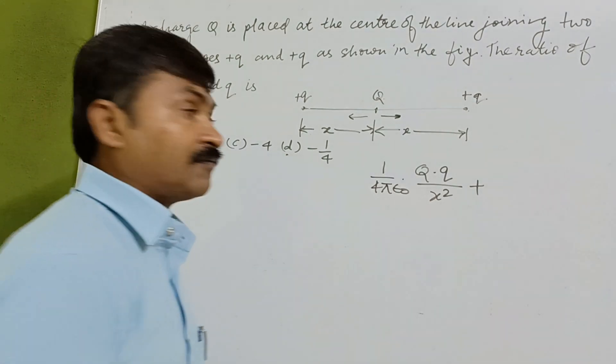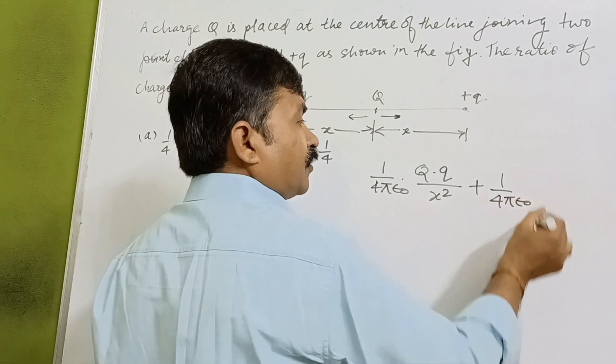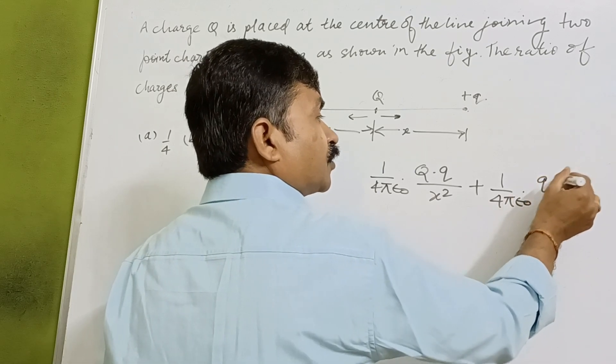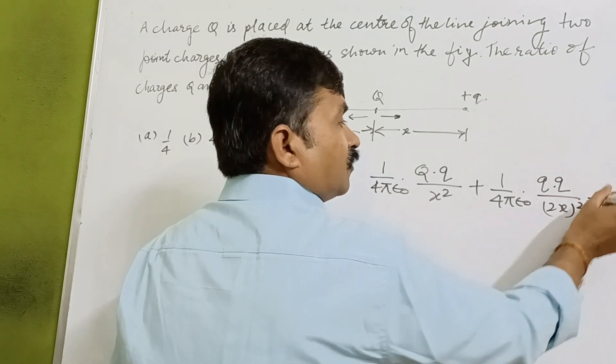The sum of these two forces must be equal to zero. So we have taken 1/(4πε₀) into Q into Q upon the distance is 2x² which is equal to zero.